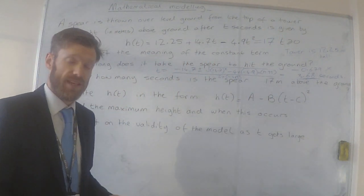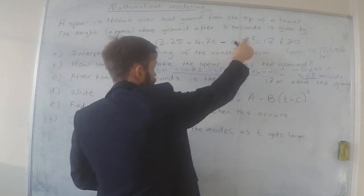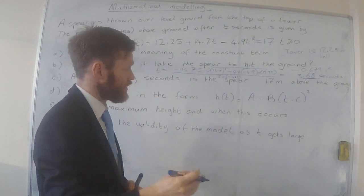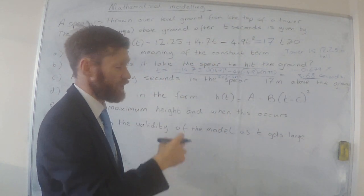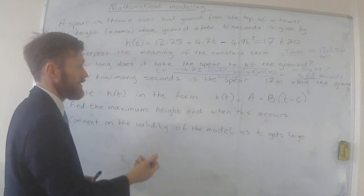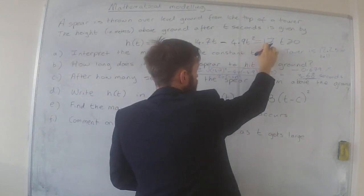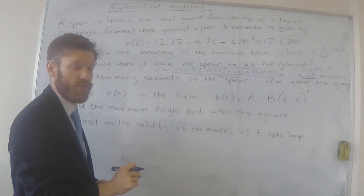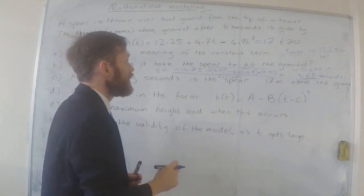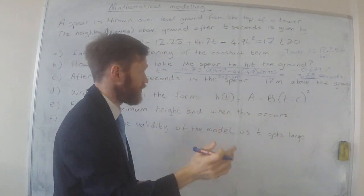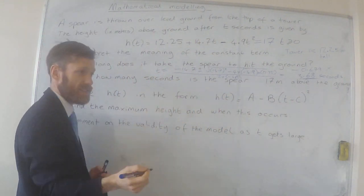And again, I can do the same process. I can solve this equation using the quadratic formula, once I've made it equal to zero, and work out the times. So what I would want to do is make this equation equal to zero, so subtract the 17 away from both sides, and then if I use the quadratic formula, that will give me my answer.